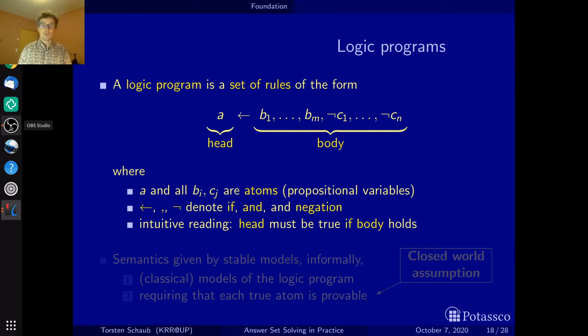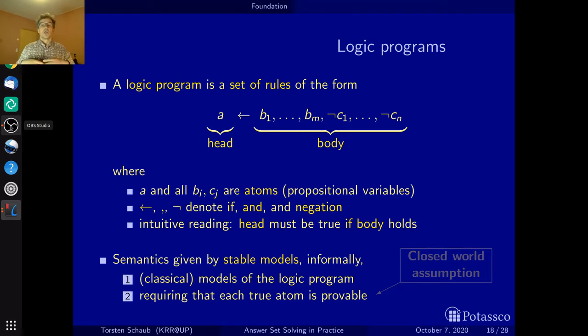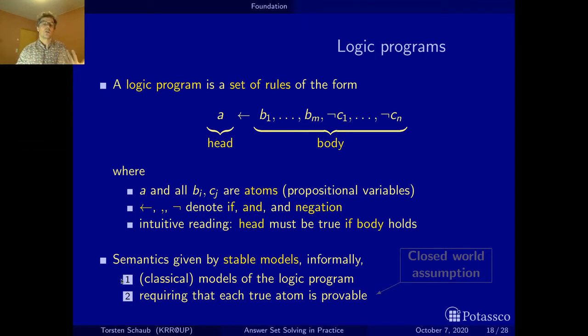And then a stable model is informally a particular classical model of a logic program. And a classical model is an assignment of truth values to a logic program that makes it true. But in addition, and this is the second condition, this is actually what makes then a model stable. So the first condition simply says, oh, it's a model. And the second condition makes it a stable model. And this actually implements the closed world assumption. But let's do one after the other.